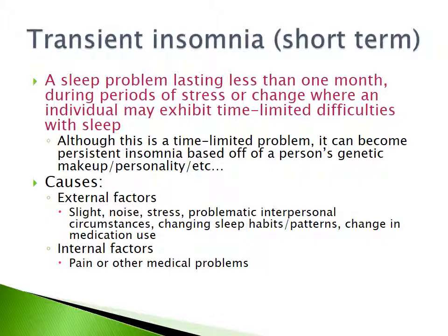Transient insomnia is a sleep problem lasting less than one month during periods of stress or change where an individual may exhibit time-limited difficulties with sleep. Although it eventually goes away, it can become persistent insomnia based on a person's genetic makeup, personality, and other factors. External causes include light, noise, stress, problems in relationships, changing sleep habits or patterns, and changes in medication use. Internal factors include pain or other medical conditions such as asthma or COPD.